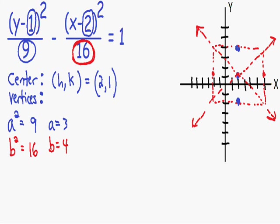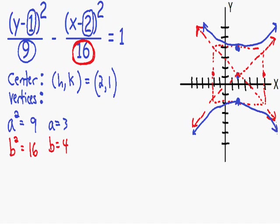Now we draw a semi-accurate graph of the hyperbola. Starting from one vertex, the curve opens outward and never touches the asymptote. The same applies going the other direction. We do the same for the other vertex — it opens in the opposite direction, never touching the asymptote.